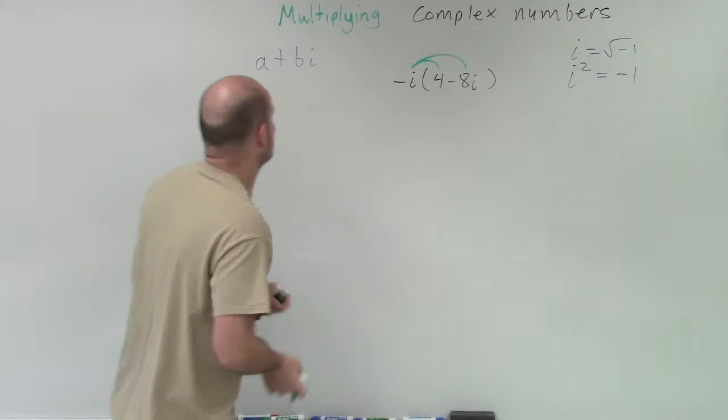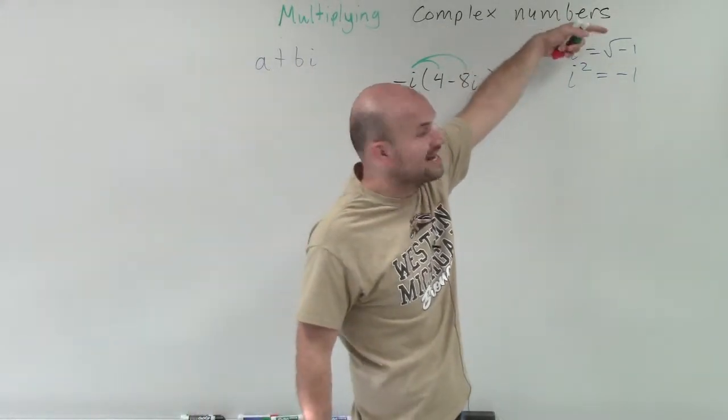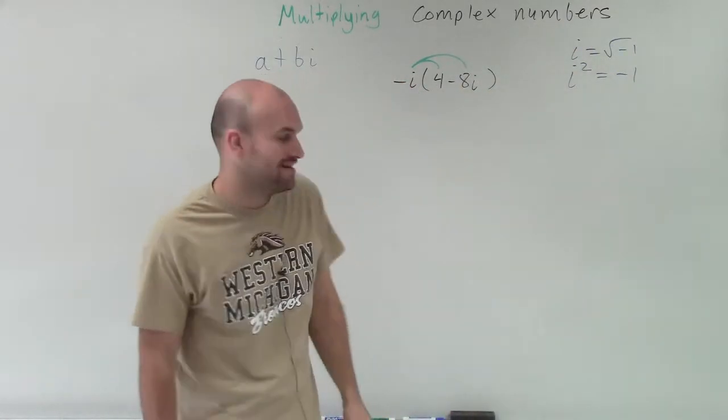And up here, I have a couple of things. Here's our form of a complex number. And then, our imaginary units where i equals the square root of negative 1, and i squared equals negative 1.